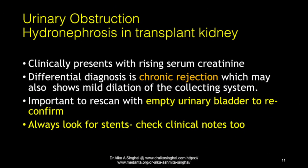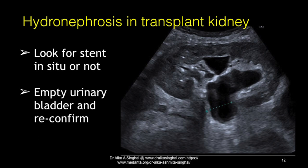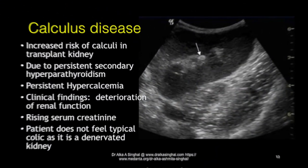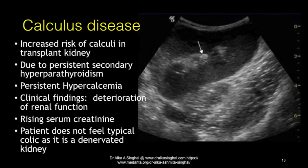Common abnormalities: hydronephrosis. Clinically it presents with rising serum creatinine, and the differential diagnosis is often chronic rejection, which can also show mild hydronephrosis. In transplant kidneys, as they are denervated, it is very important to reassess after emptying the bladder to exclude false positives. Look for any stones as well. The incidence of renal calculi in post-transplant kidneys is higher owing to hypercalcemia and secondary and tertiary hyperparathyroidism. Patients do not feel the typical colic as these are denervated kidneys.